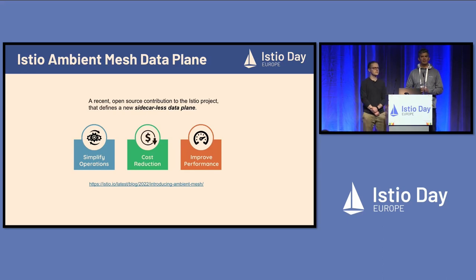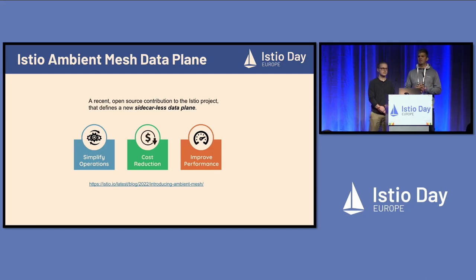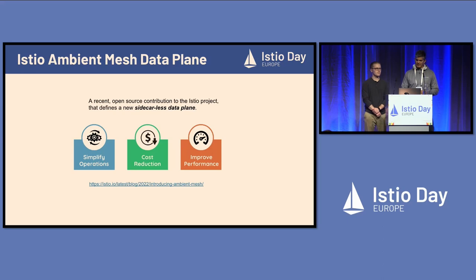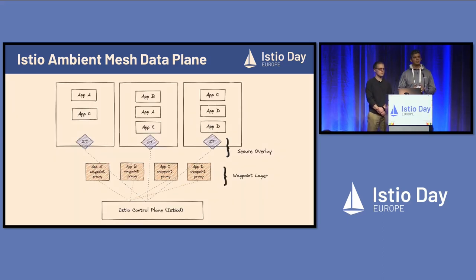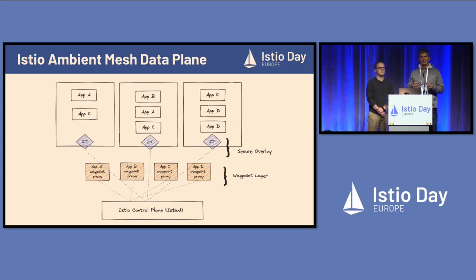Secondary benefits of Istio Ambient include running fewer proxies, so we don't have to reserve as many resources for sidecars, and in certain cases we can improve performance. We'll share performance numbers in the roadmap session. Those are some of the high-level reasons why we started working on this approach.